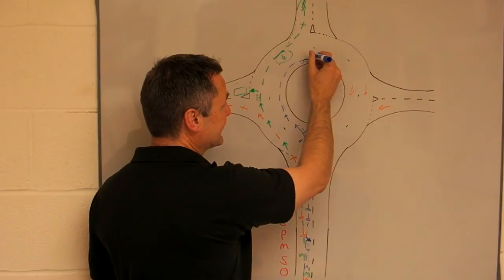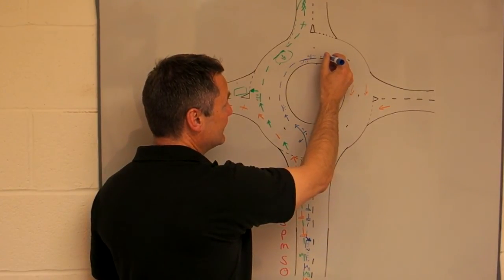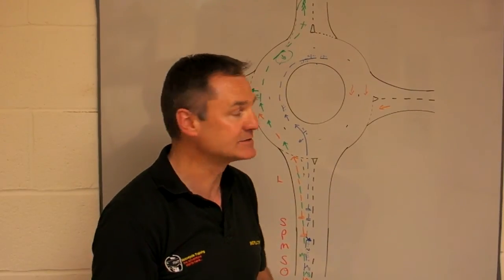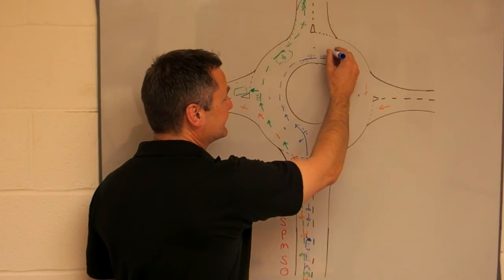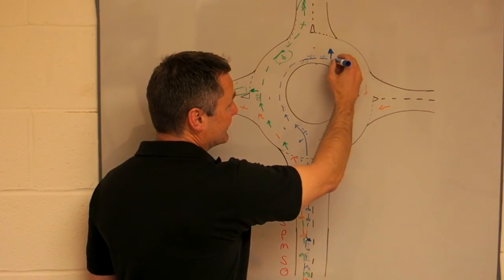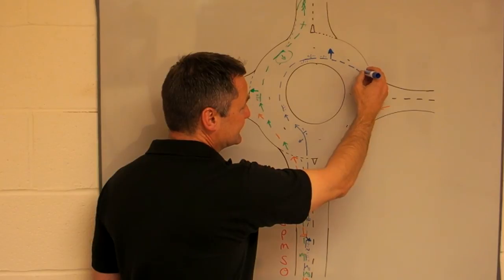So at that point, we indicate left. We allow the indicator to flash so people know we're coming off the roundabout. And then I take a lifesaver to the left because I'm moving lanes, and then I come straight across if it's safe and clear to do so, as straight as we can into the new lane.